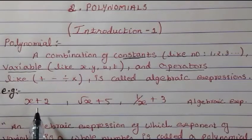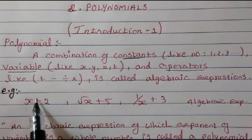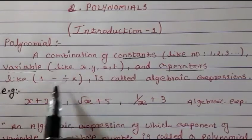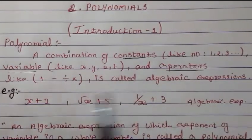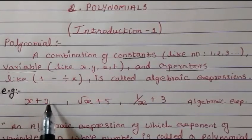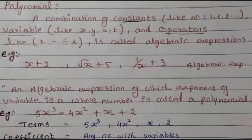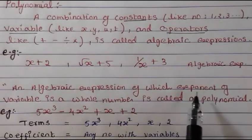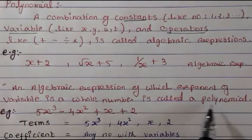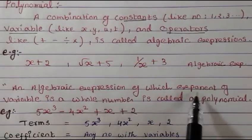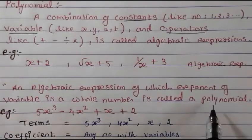Let's look at an example. These are algebraic expressions because we have a variable, an operator, and a constant. Now, which one among these is a polynomial? A polynomial is an algebraic expression where the exponent of the variable is a whole number.